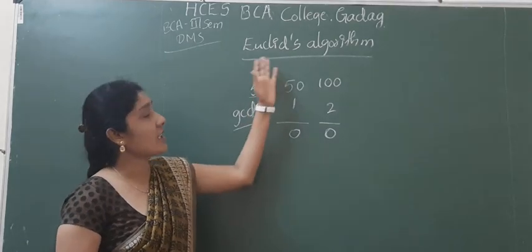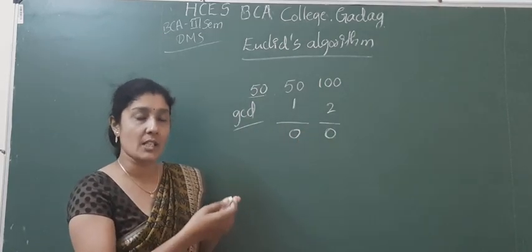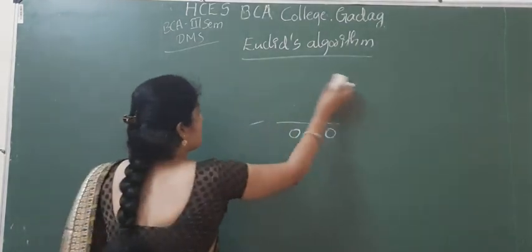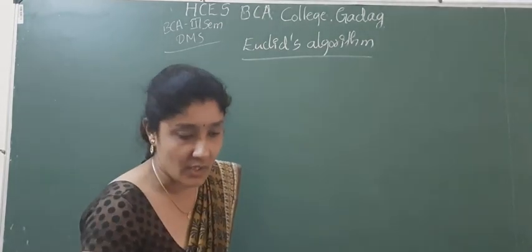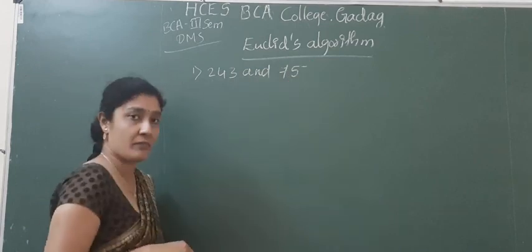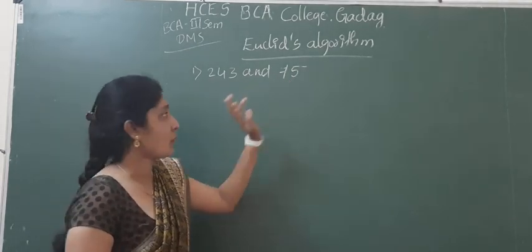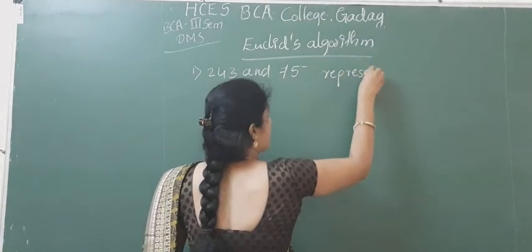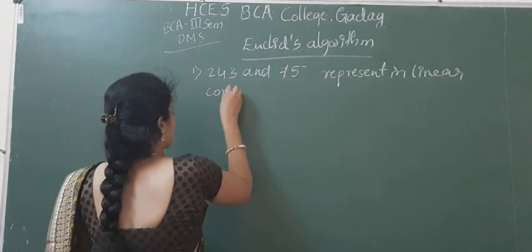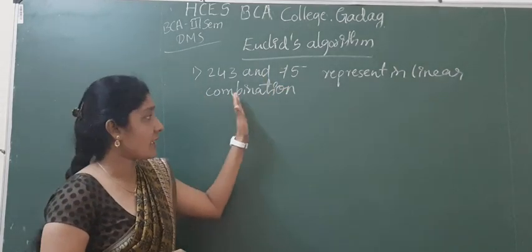What is GCD? Greatest common divisor. So we have to find out the GCD of two given integers by using the Euclidean algorithm. Euclid is the name of a Greek mathematician who described this method. Hence, the name is given as Euclidean algorithm. Now let us solve one example. What is this linear combination? That will be explained when we solve the problem.